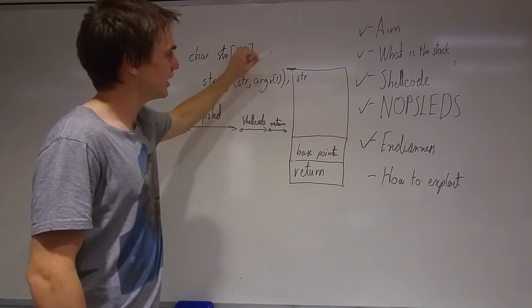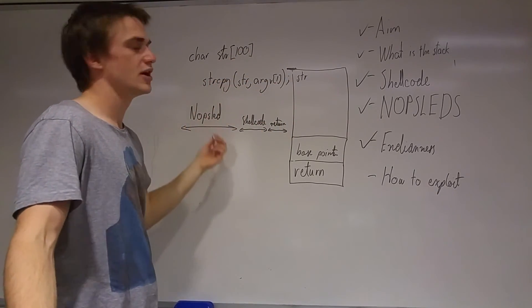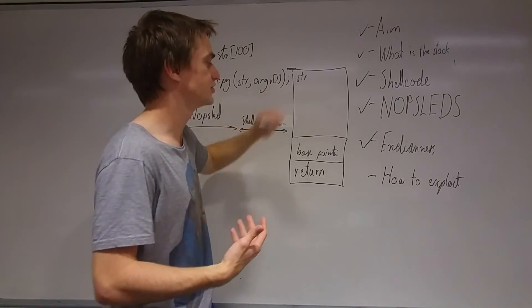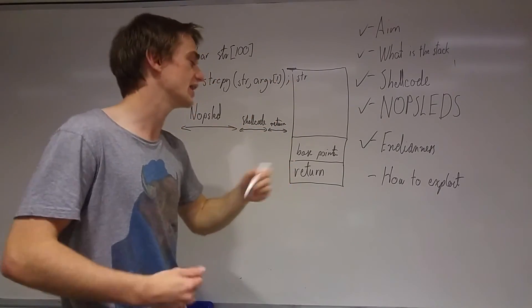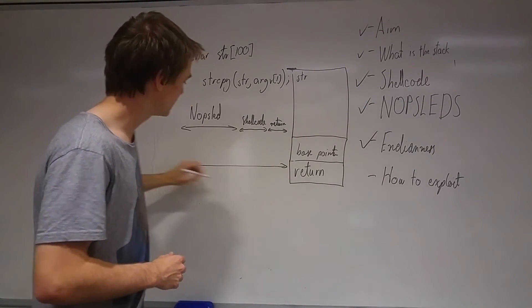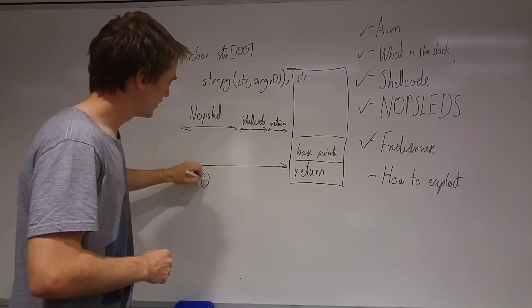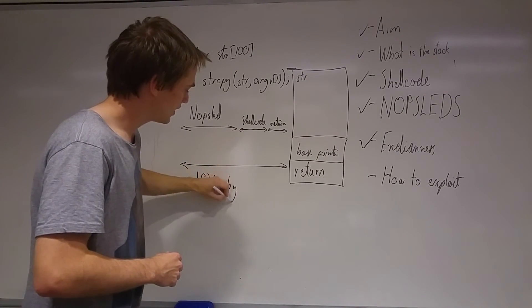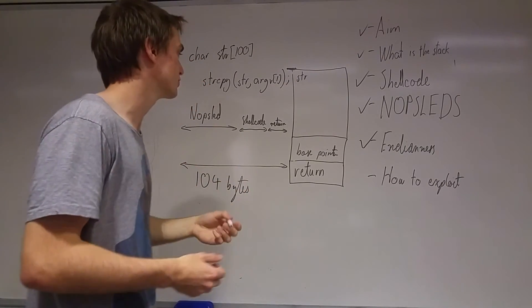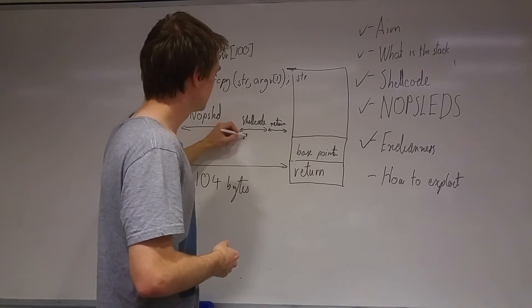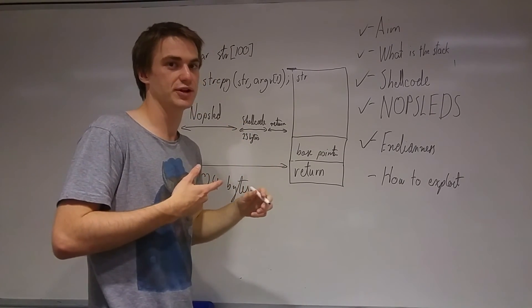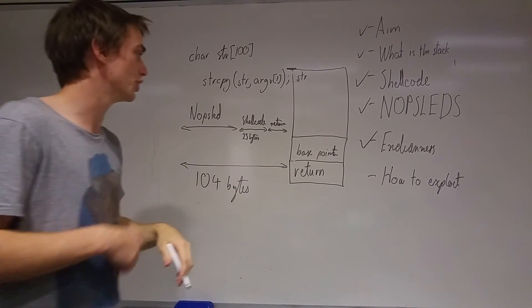So we're going to find the size of this. For the purpose of this video I'm just going to assume it's 104 because this is 100 here and this is 4. In reality it may be a bit different. So this whole bit here is 104 bytes. The shortest shellcode I've found is 23 bytes, so I'm just going to assume it's that. It doesn't really matter how long it is as long as it works.